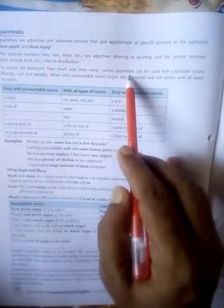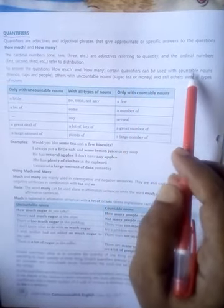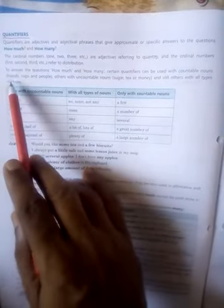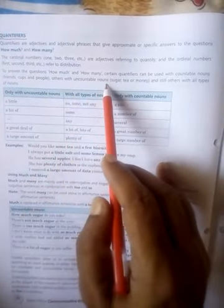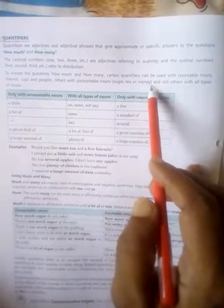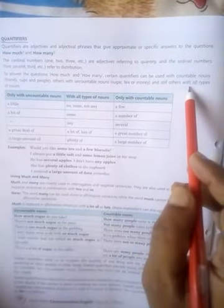To answer the questions how much and how many, certain quantifiers can be used with countable nouns friends, cups and people, others with uncountable nouns sugar, tea or money and still others with all types of nouns.